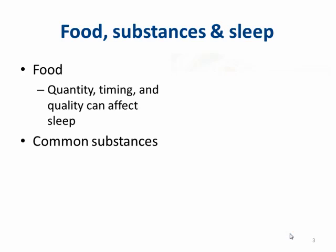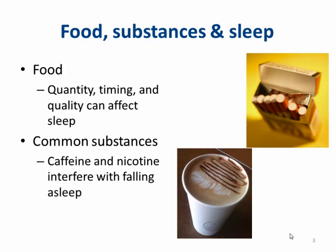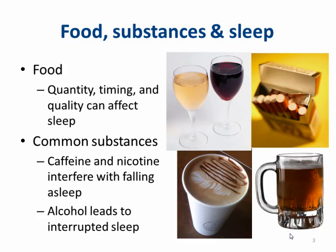Caffeine, nicotine, and alcohol are substances that disrupt normal functioning of the central nervous system and can lead to less restful sleep. Caffeine and nicotine are stimulants that can interfere with falling asleep, while alcohol is a depressant that typically leads to nighttime awakenings. We'll look at these substances and their effects on the body and sleep in more detail later in the course. If you use any of these substances, start to observe how they affect you and what role they might have in your ability to sleep well.